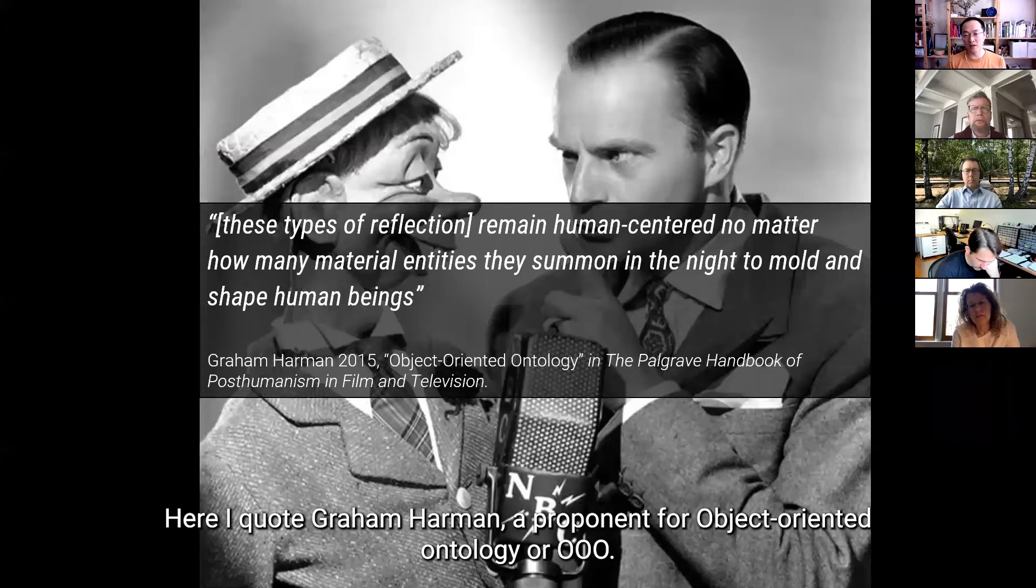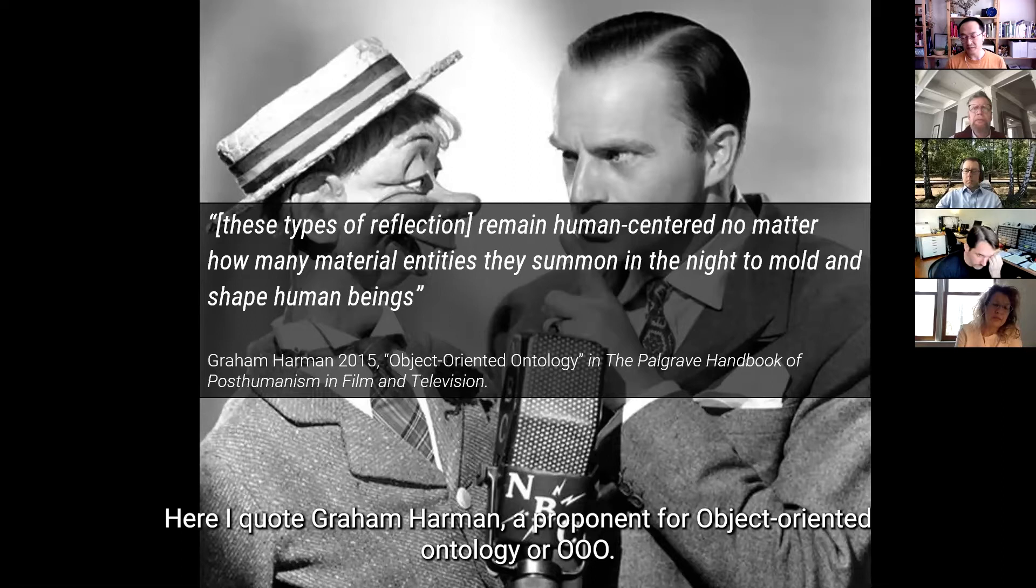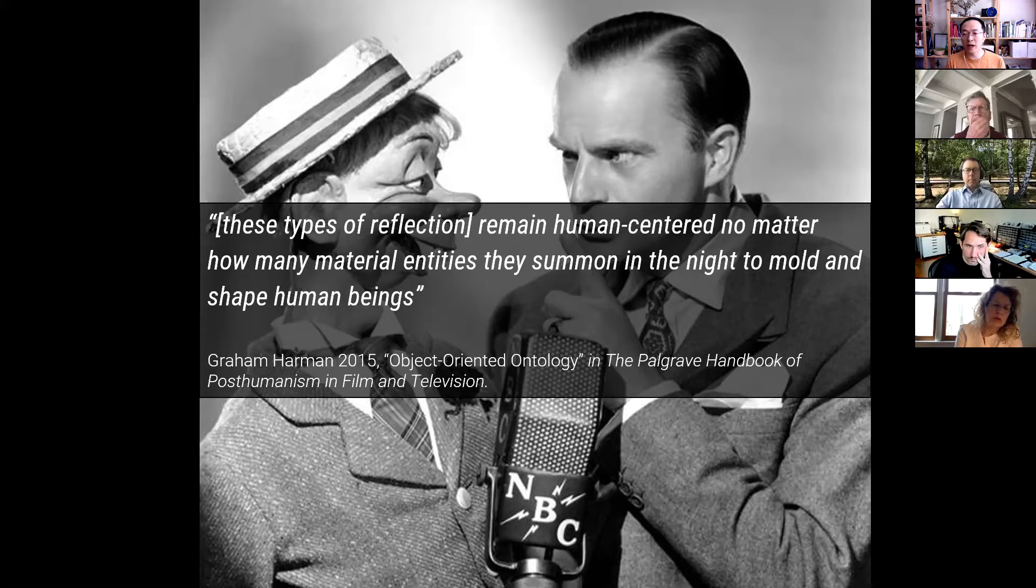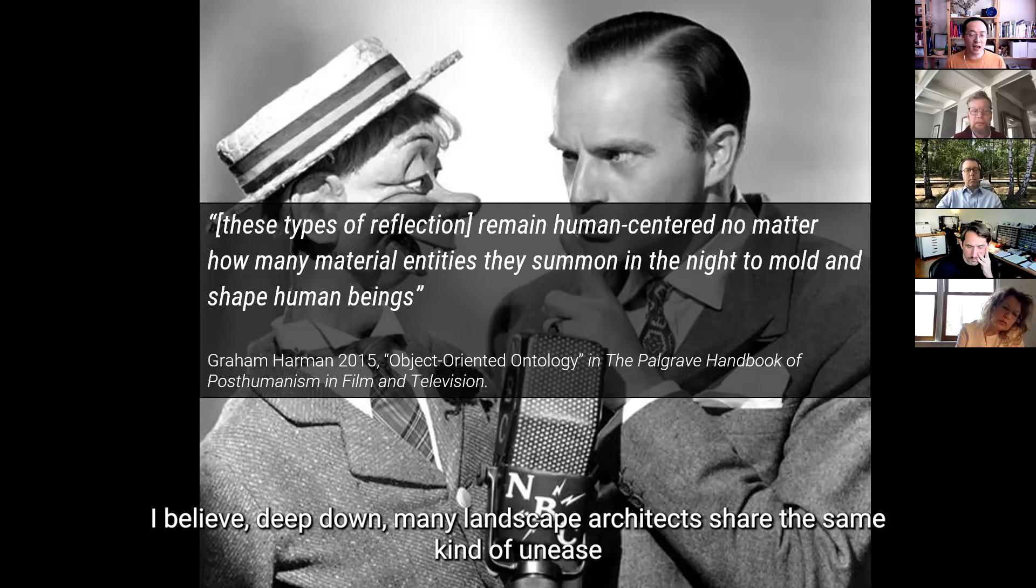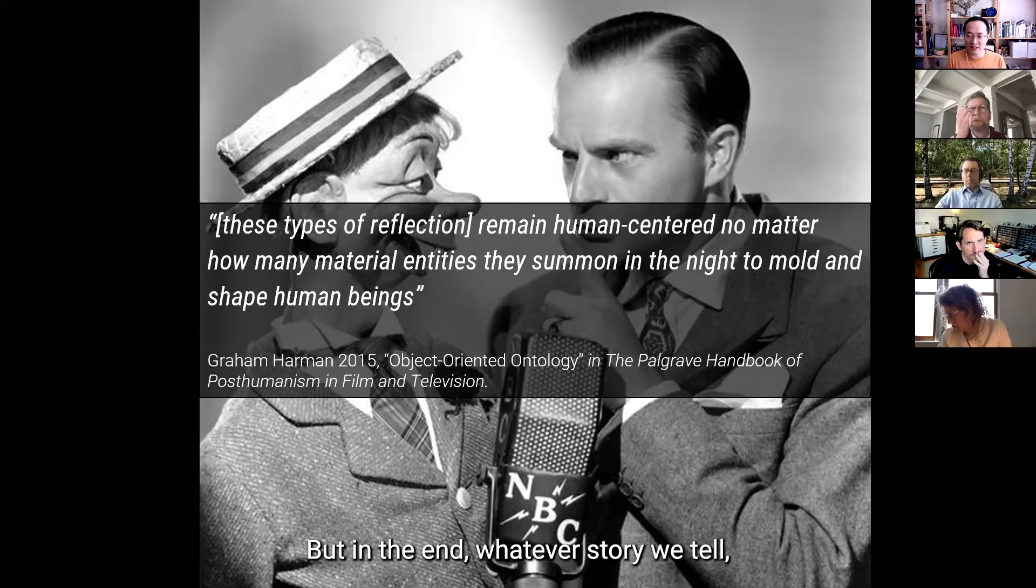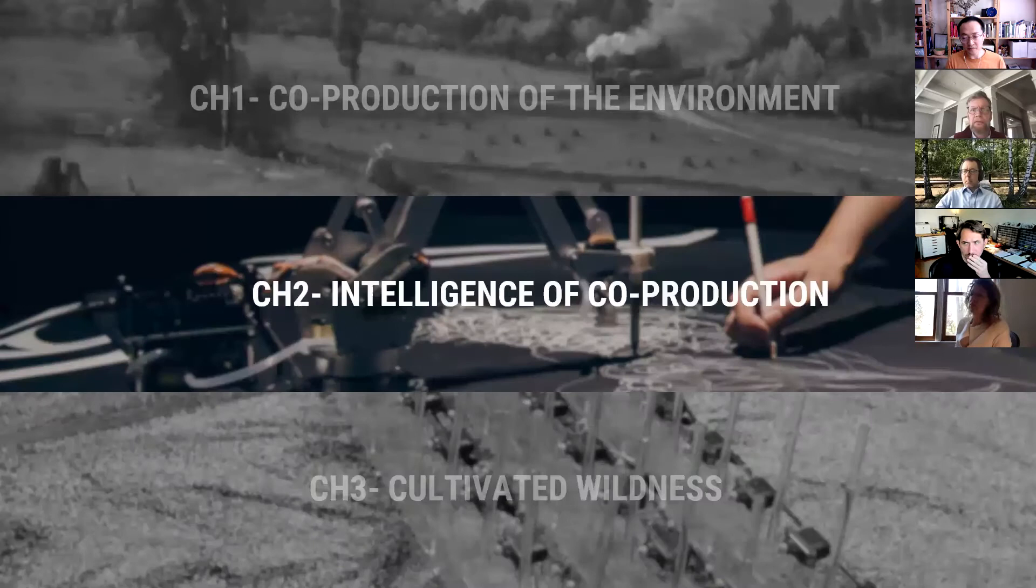Basically, we turn non-humans into actants to perform the role we assign to them in the story we tell ourselves. So this is the biggest irony in post-humanism, I see. So searching for a non-human agency leads to yet another level of human hubris. Here, I quote Graham Harman, and he is a proponent for object-oriented ontology, or Triple O for short. And he says, these type of reflection remain human-centered no matter how many material entities they summon in the night to mold and shape human beings. And I really believe deep down, many landscape architects share the same kind of unease when we say we are choreographing non-human agents, but in the end, whatever story we tell, it's always a story of humans, never a story of non-human species.